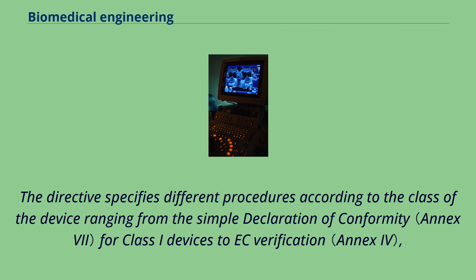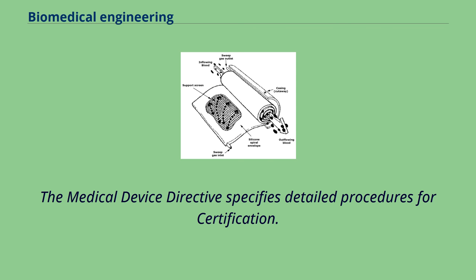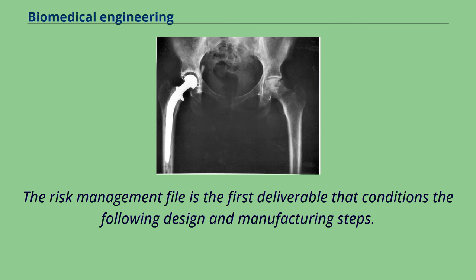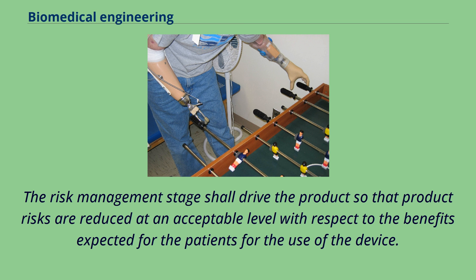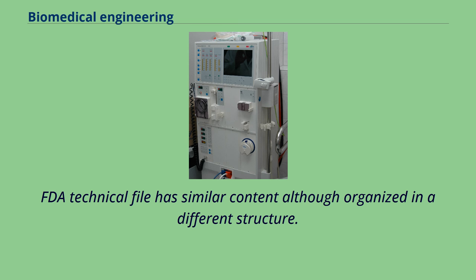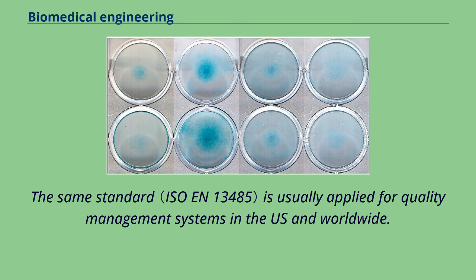The directive specifies different procedures according to the class of the device, ranging from the simple declaration of conformity for class I devices to EC verification, production quality assurance, product quality assurance, and full quality assurance. The Medical Device Directive specifies detailed procedures for certification, including tests and verifications contained in specific deliverables such as the risk management file, the technical file, and the quality system deliverables. The risk management stage shall drive the product so that product risks are reduced at an acceptable level with respect to the benefits expected for patients. The FDA technical file has similar content although organized in a different structure.